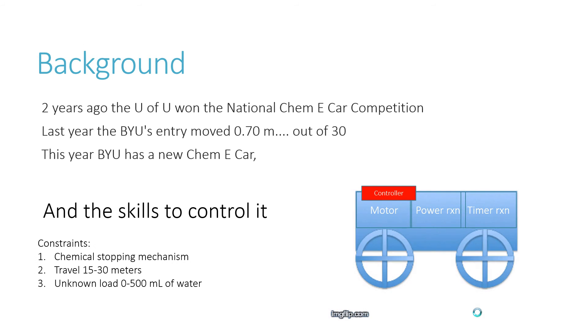The constraints of the Chem E Car are we have a stopping mechanism that's a chemical timer. It has to travel between 15 and 30 meters, which they'll announce the day of, and carry a load of 0 to 500 milliliters of water, which they will also announce the day of.